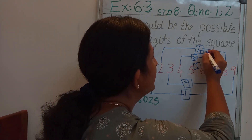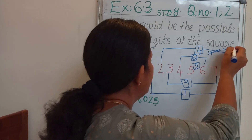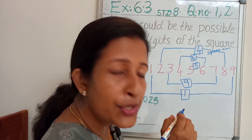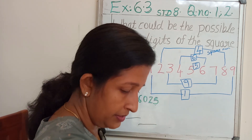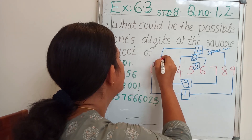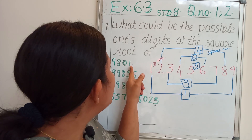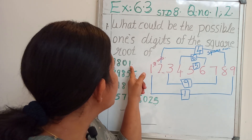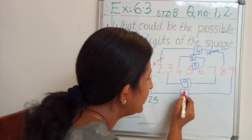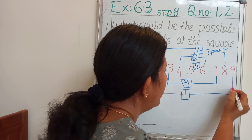These are square numbers. And the numbers ending with 1, 2, 3, 4, 5, 6, 7, 8 are the square roots. Our question is: if a square number is ending with 1, its square root should end with 1 or 9.